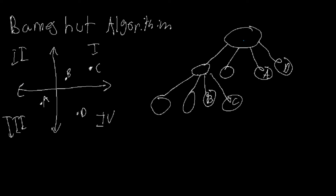Let me explain the Barnes-Hut algorithm. We have a coordinate plane with four different points: B and C in quadrant 1, zero particles in quadrant 2, particle A in quadrant 3, and particle D in quadrant 4. We have a tree where letters are located analogously to their position in the graph. The root node represents the center of the entire grid, with children nodes for each quadrant. A is in the quadrant 3 node, D is in the quadrant 4 node, and B and C are children of the quadrant 1 node because there are two particles there, so we have to subdivide it further.